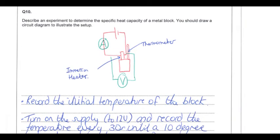The next question looks at an experiment to measure the specific heat capacity of a metal block — something you should know and be able to explain. The first stage is drawing a diagram. We need to measure thermal energy supplied electrically, so we measure electrical power and multiply by time. This requires an ammeter in series and a voltmeter in parallel with the heater.